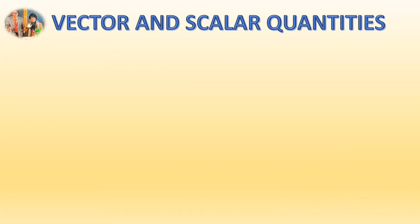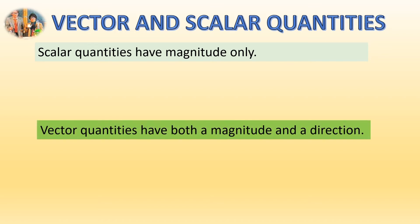Right, first let's look at the definitions. So a scalar quantity has magnitude only. Magnitude is a posh word for size. Whereas vector quantities have a magnitude, a size, and a direction.